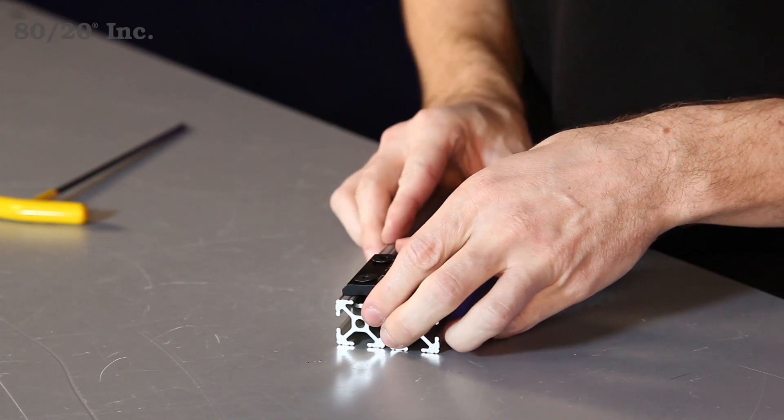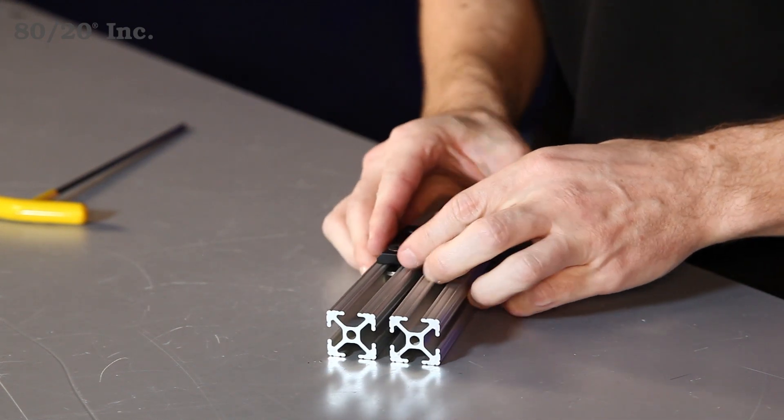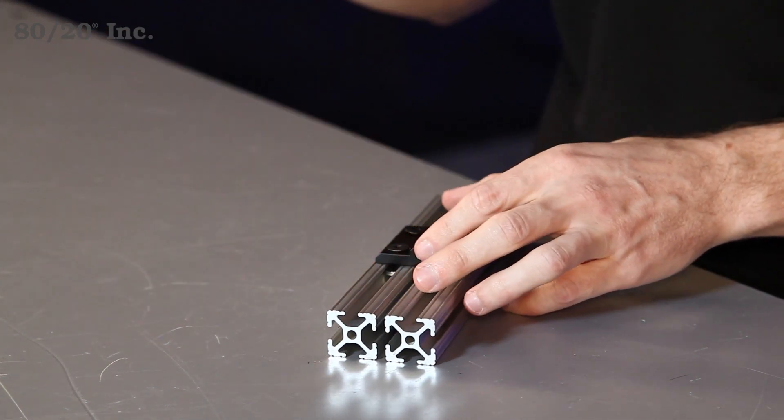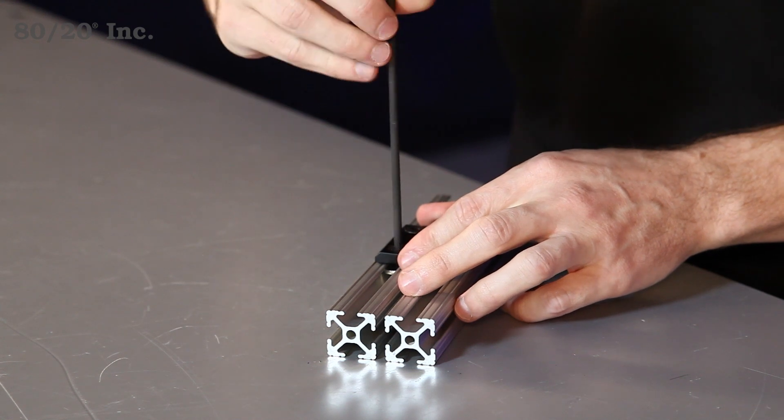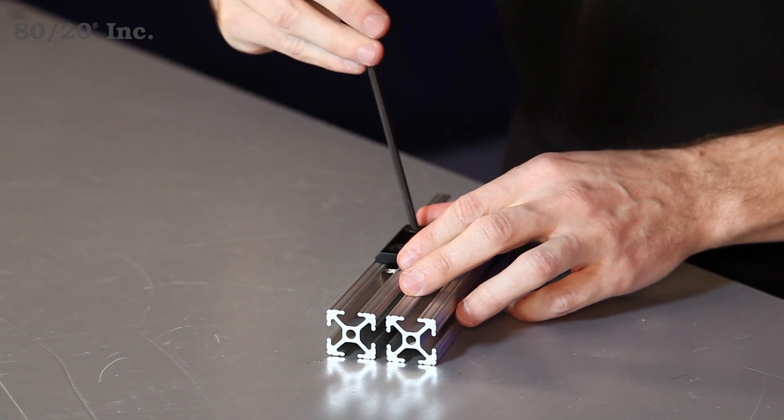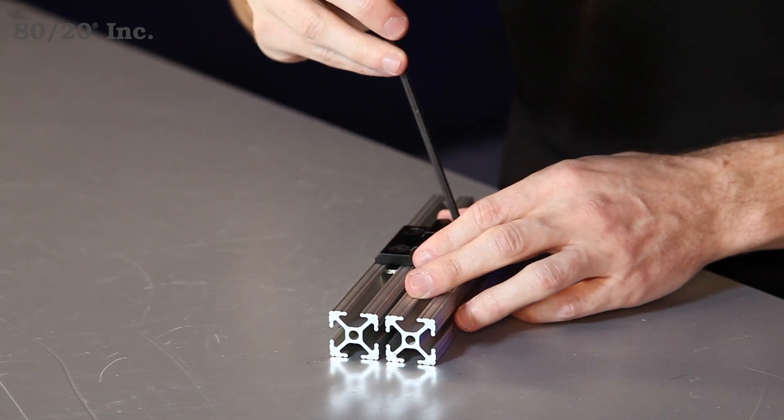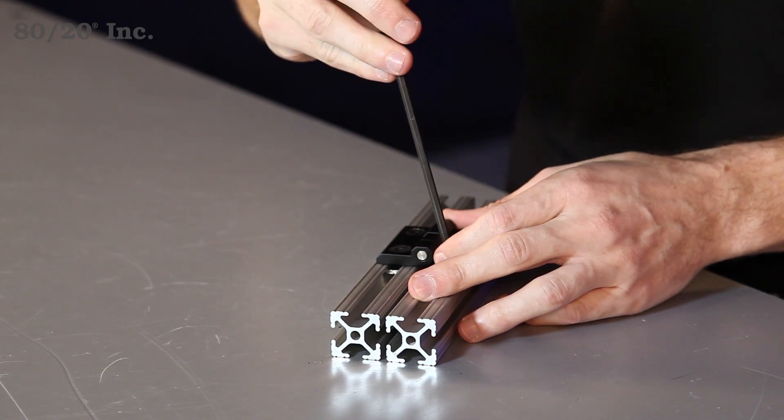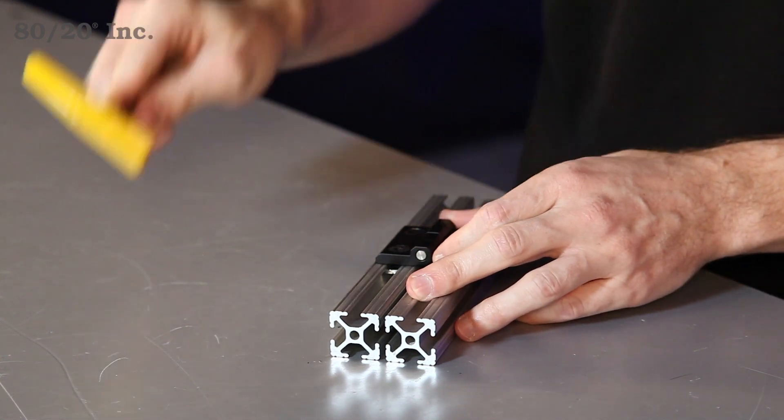Now once we have those lined up and into position, we'll take our wrench and we'll tighten down each bolt. Now once we have all these tightened down, our hinge will be ready for use.